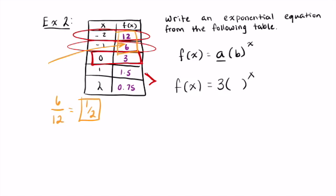So that means that my function is f of x equals 3 times 1 half to the x. If I notice, my y values, f of x, is decreasing. It's going from something big to something small. Therefore, it tells me that I have a decay function.